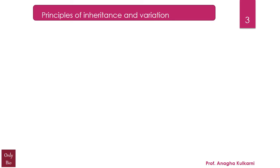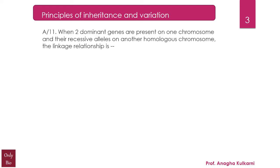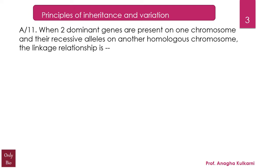Question number 11 relates with the chapter Principles of Inheritance and Variation. The question is: when two dominant genes are present on one chromosome and their recessive alleles on another homologous chromosome, the linkage relationship is —